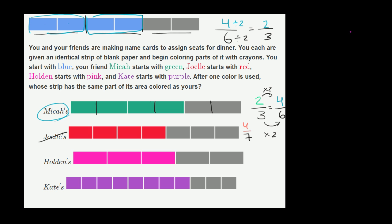Holden has colored in three out of five sections. Three out of five sections. Once again, not obvious that I can multiply both the numerator and the denominator of three-fifths times something to get you to four-sixths. So these aren't equivalent.